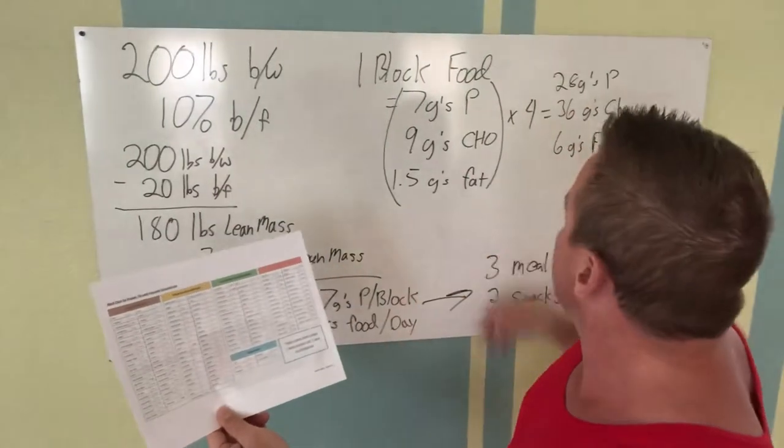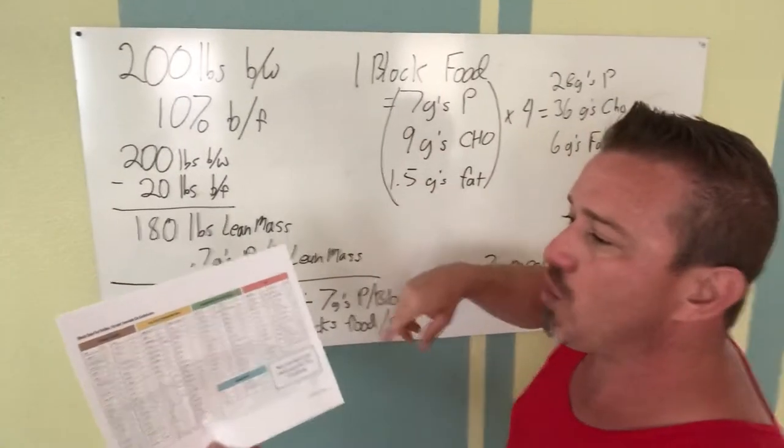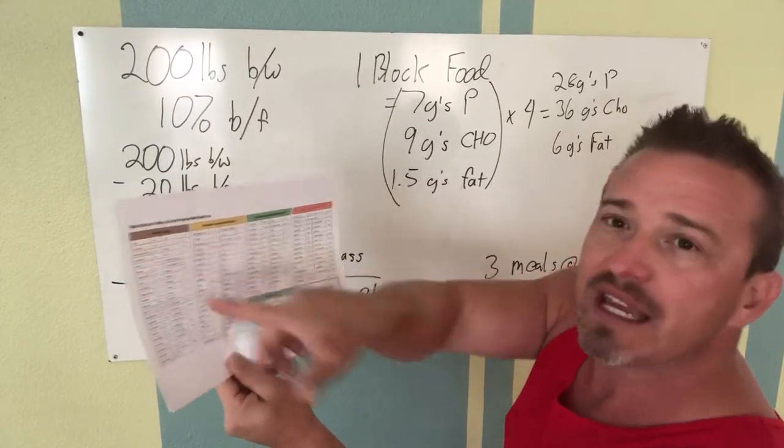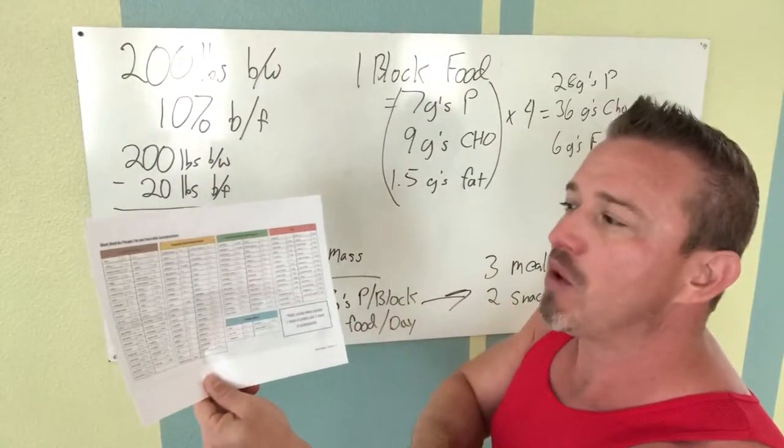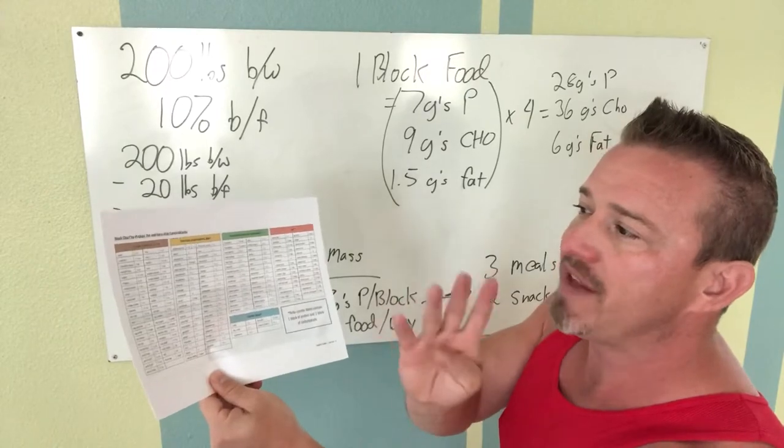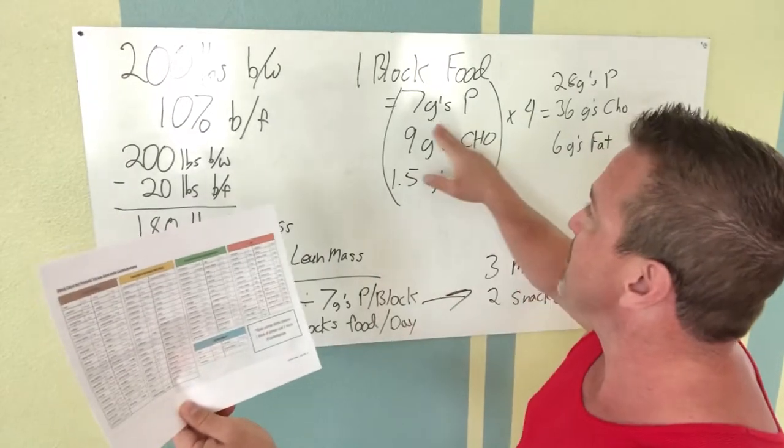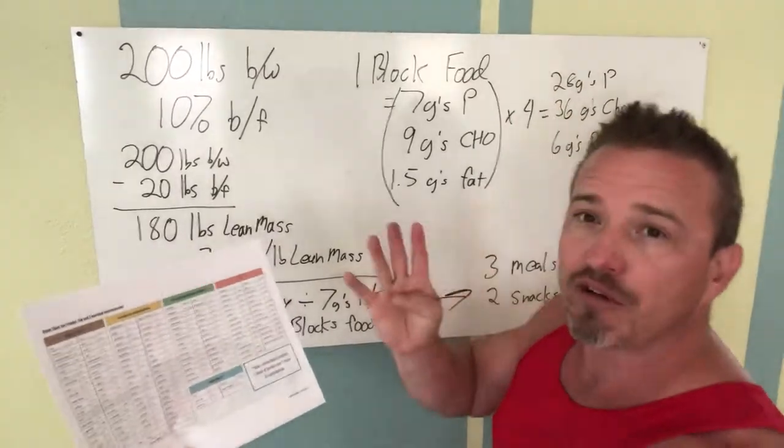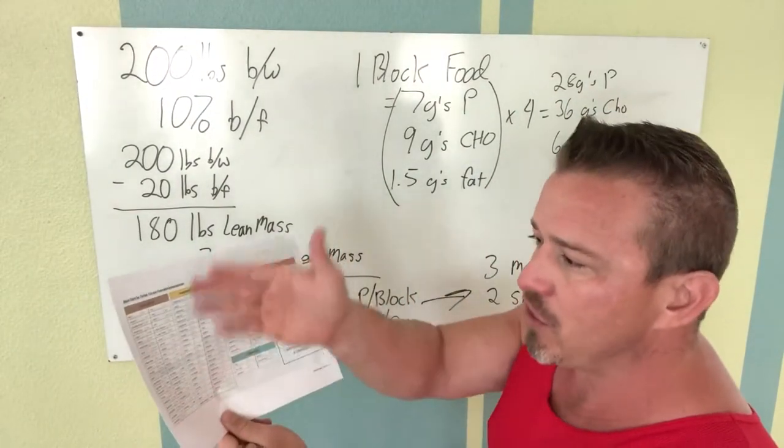Four times the seven is 28. So one ounce of beef is going to be one block of protein. Multiply that times four, so it'd be four ounces of beef. So four times seven would be 28 grams of protein per four ounces of cooked beef. Same thing for your chicken, same thing for your seafood.